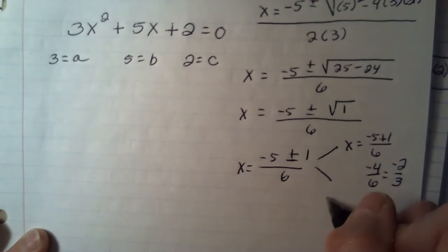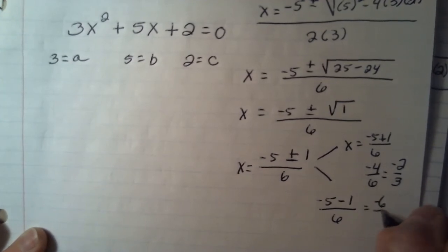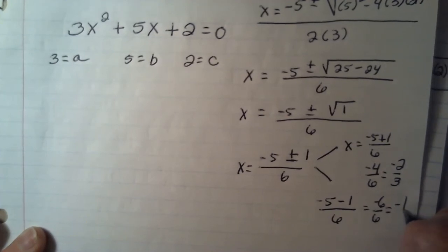Then my other answer would be negative 5 minus 1 over 6, which gives me negative 6 over 6. And when I simplify that, I get negative 1.